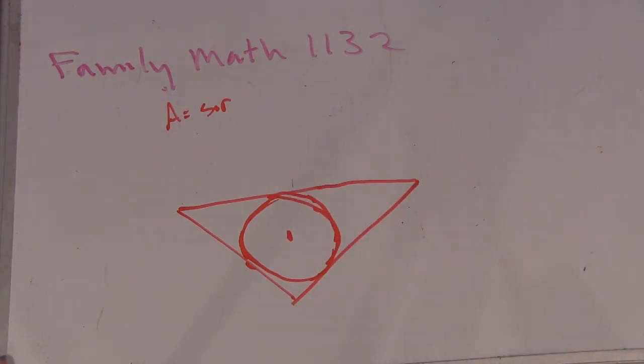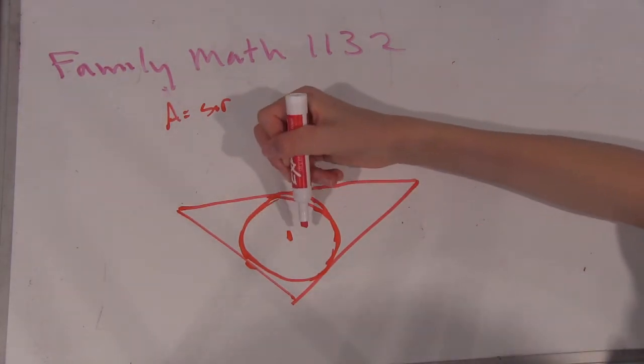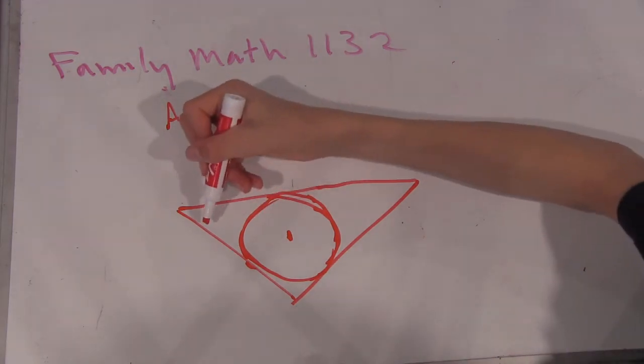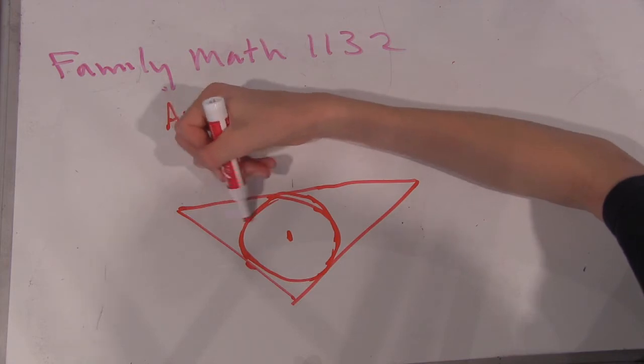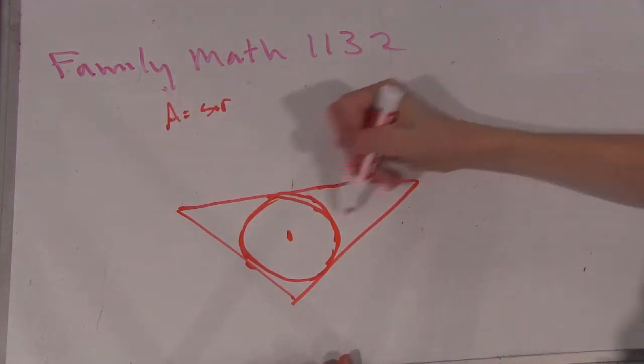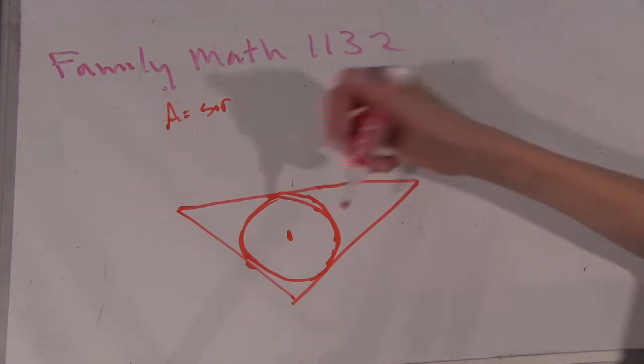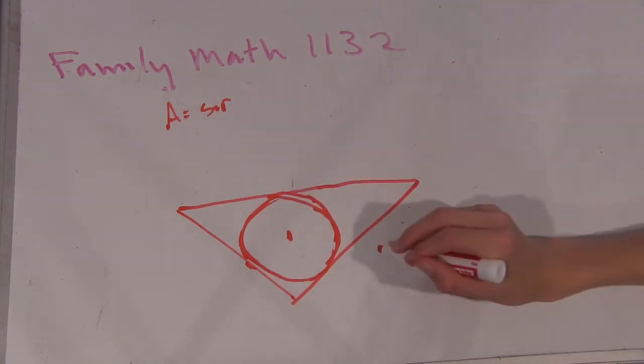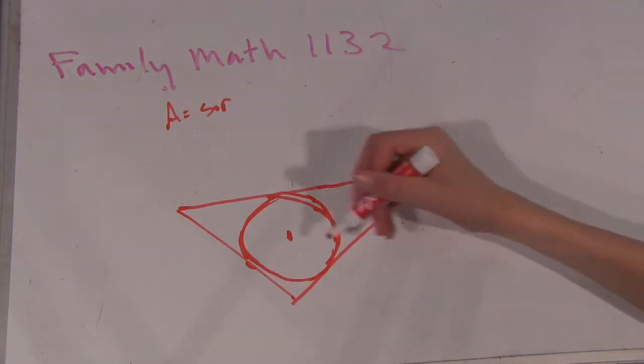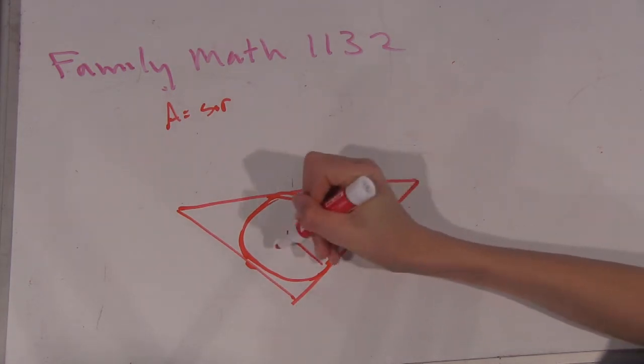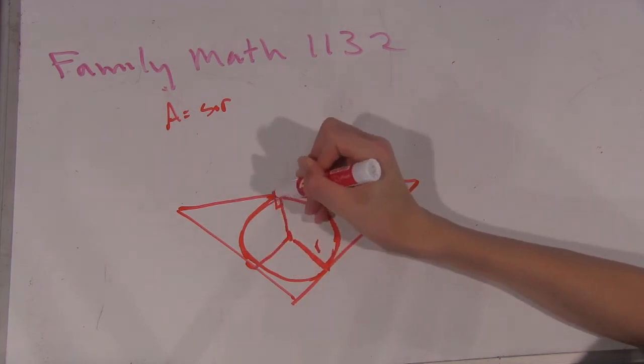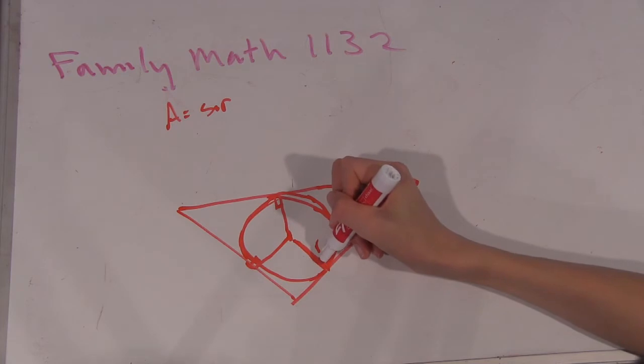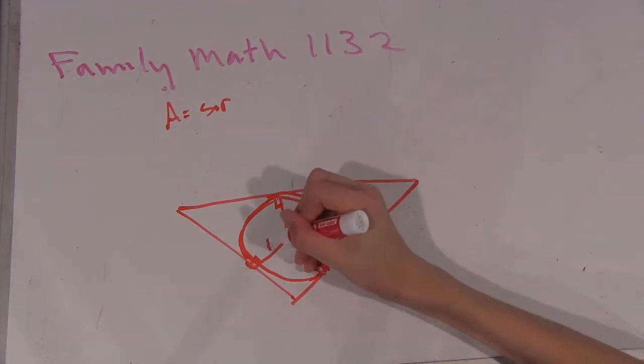So I think it comes from the way you can find the inscribed circle, the way you can construct it, and that's from the angle bisectors. Which means that this center point will be the same distance away from all three sides. Right. So that means we can draw in the radius here as a tangent here. Okay. And this is the same distance.